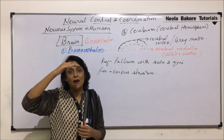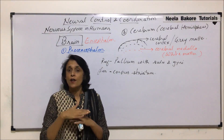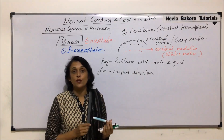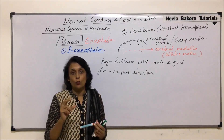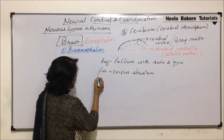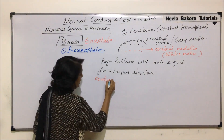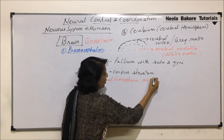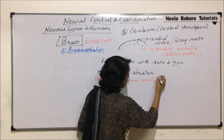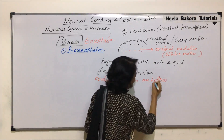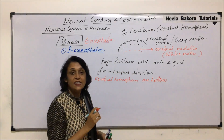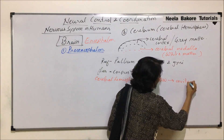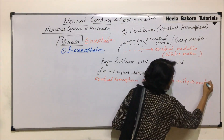The upper layer is the roof part and the lower layer is the floor part. The cerebrum or cerebral hemispheres are hollow — they have cavities. These cavities are known as ventricles.